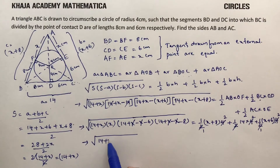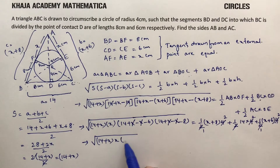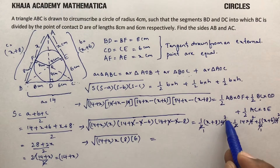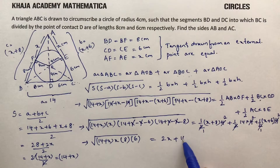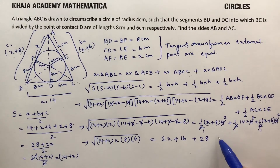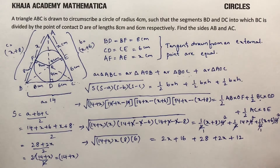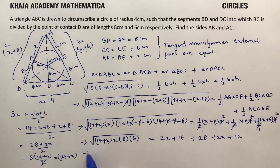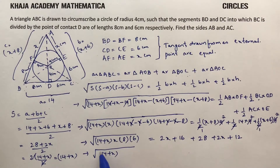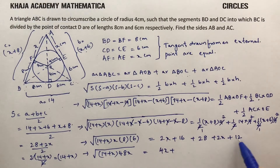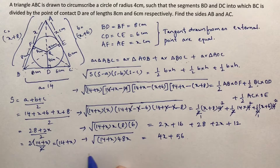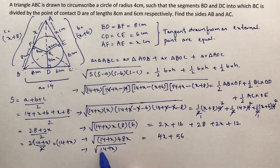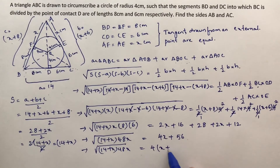Simplifying further: under root (14 plus X) into 48X equals 2X plus 16 plus 28 plus 2X plus 12, which gives 4X plus 56. Taking 4 common: under root (14 plus X) into 48X equals 4 times (X plus 14).